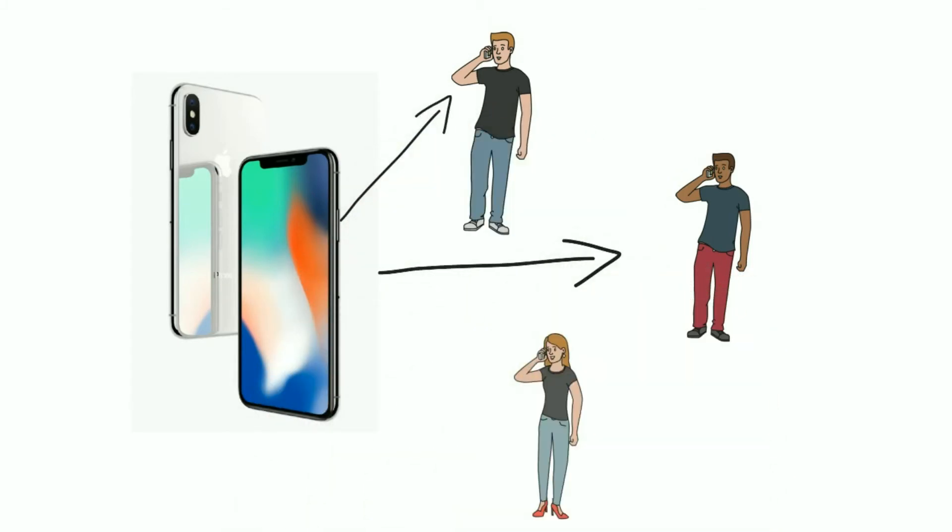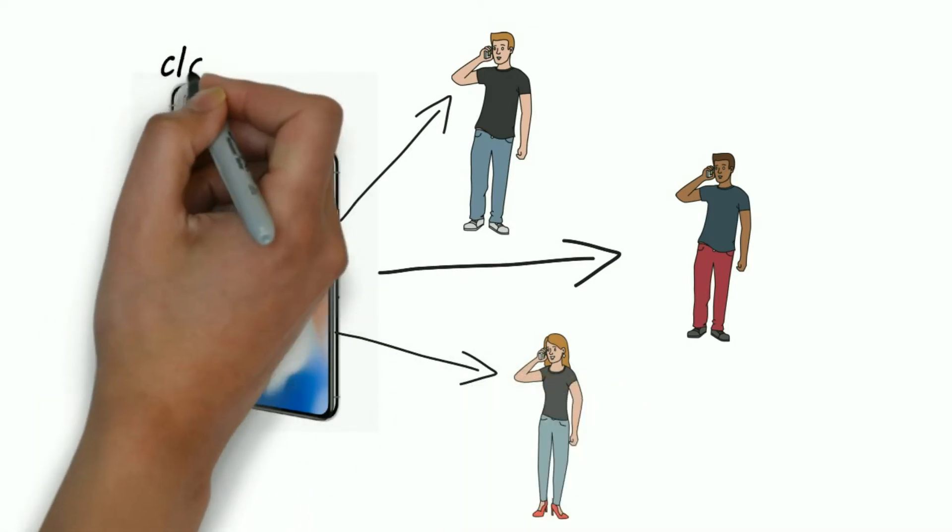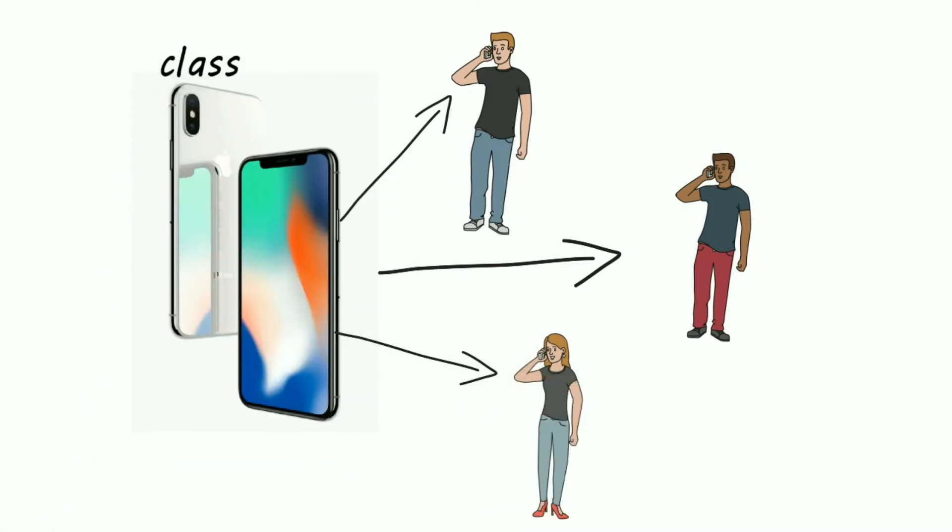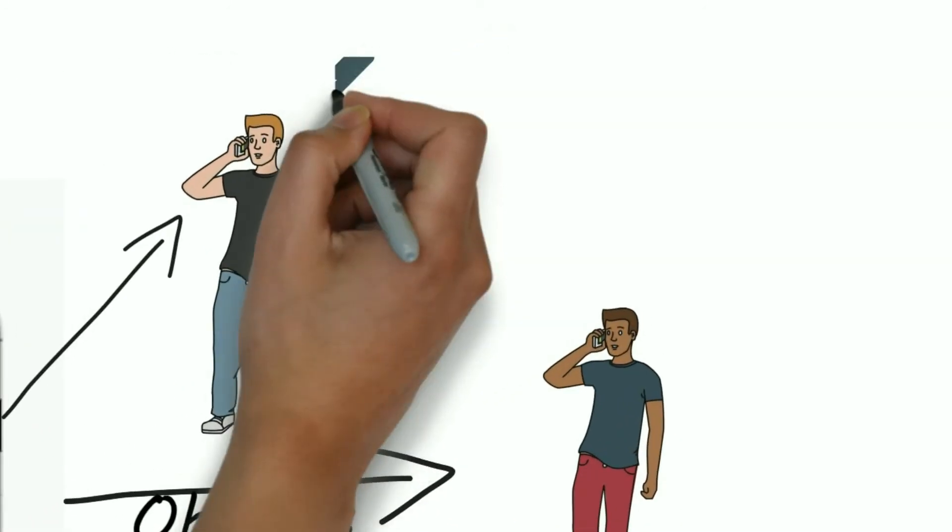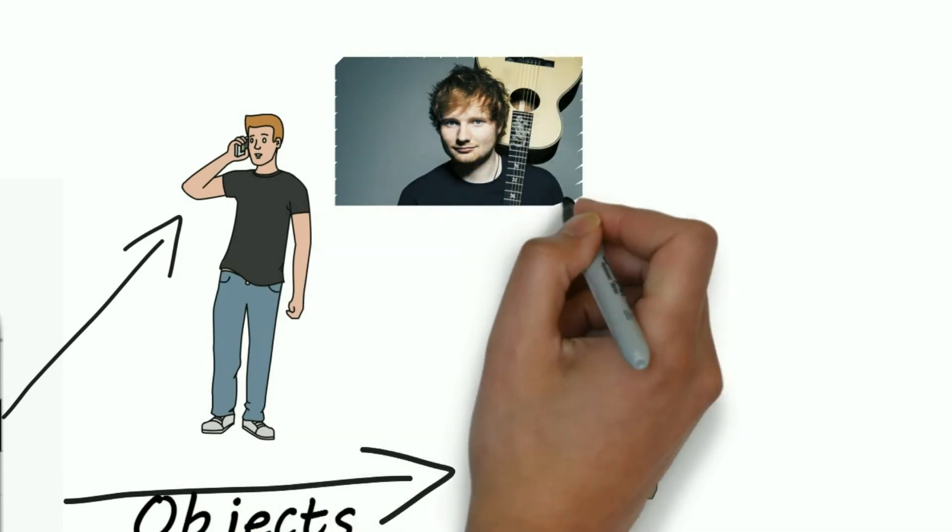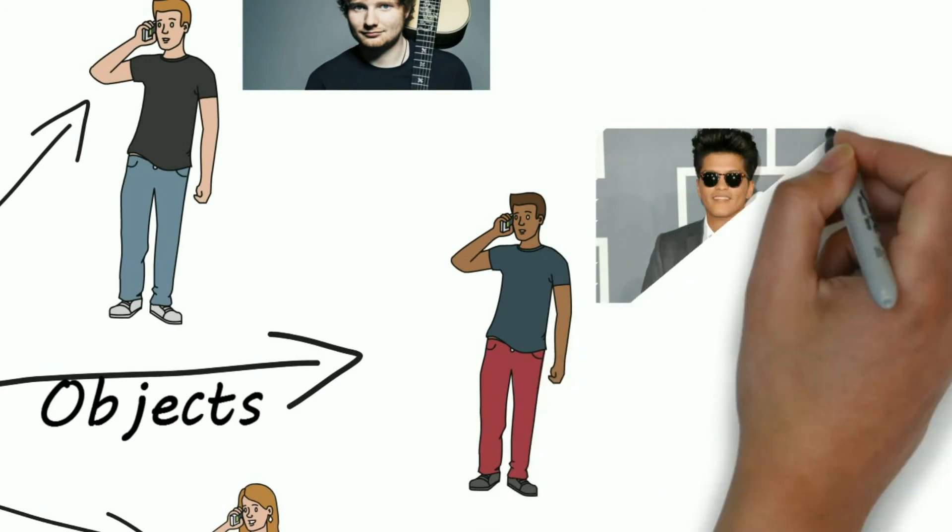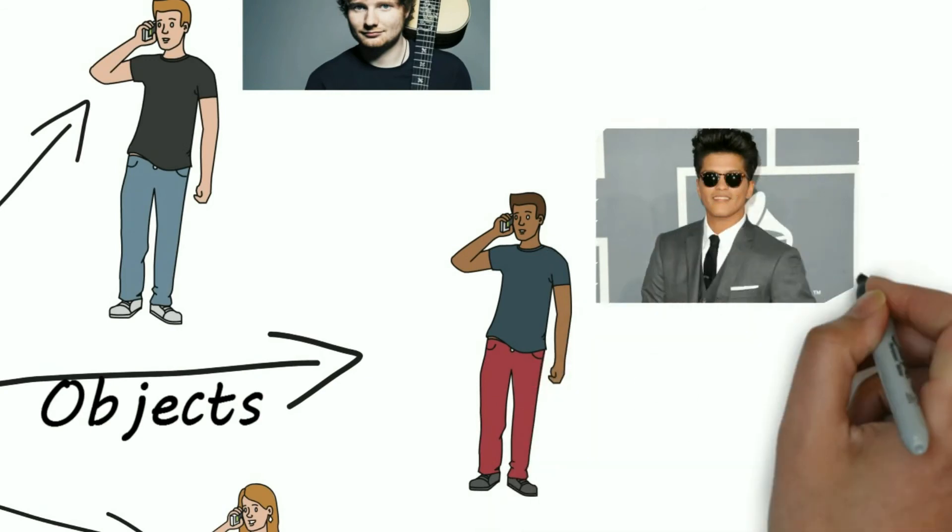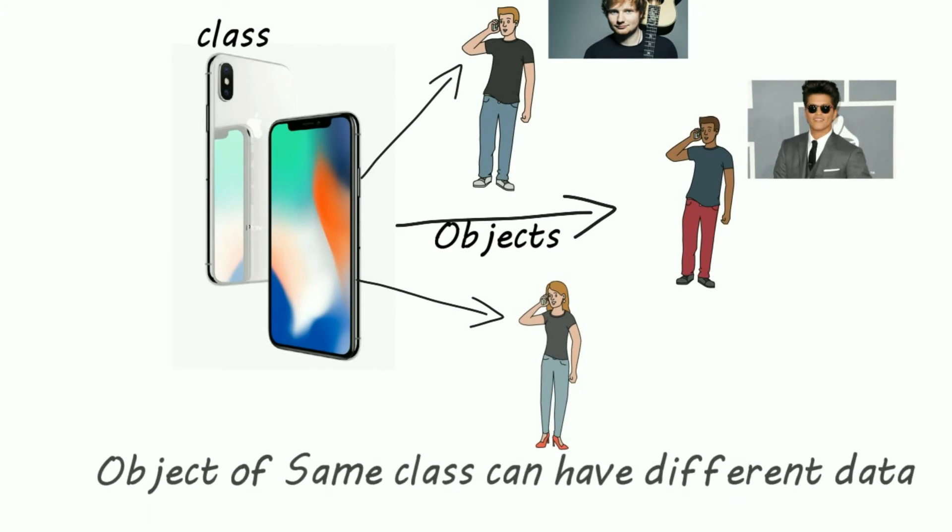Everyone is getting the same iPhone X with all same features, but data inside each iPhone is different. For example, suppose Sam is a fan of Ed Sheeran, then he'll download all his favorite songs. And John is a fan of Bruno Mars, then he'll download all songs of Bruno.